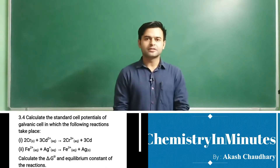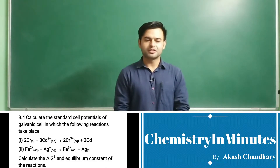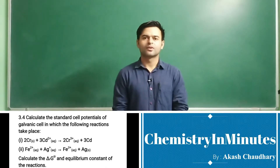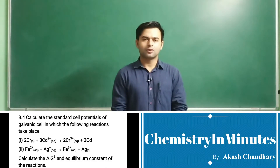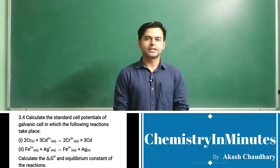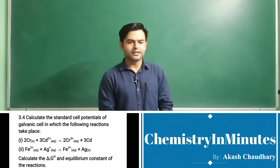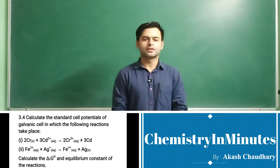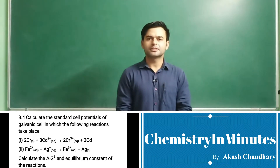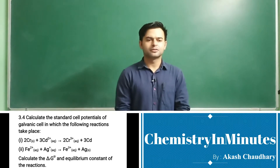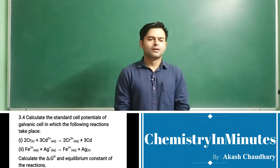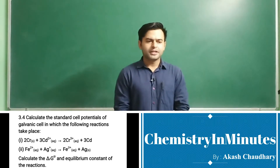Hello my dear students. Welcome to Chemistry in Minutes. The question now appearing on your screen is exercise question 3.4. The question is: calculate the standard cell potential of a galvanic cell in which the following reactions take place.